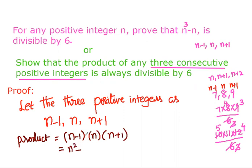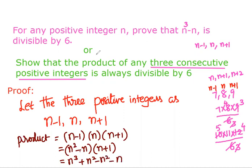Expanding: n times (n squared minus 1), which gives n cubed minus n. When we expand (n minus 1) times n times (n plus 1), the n squared terms cancel and the remaining result is n cubed minus n. So the product of three consecutive integers n minus 1, n, n plus 1 equals n cubed minus n.